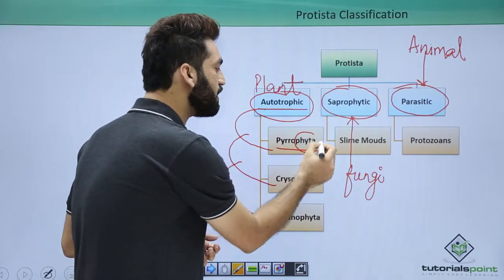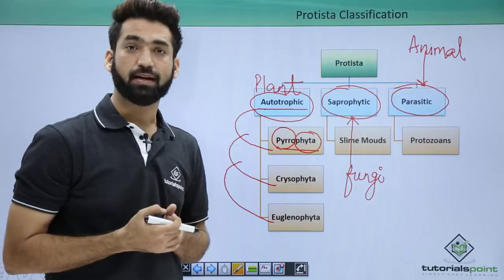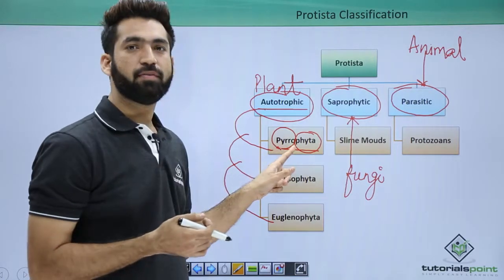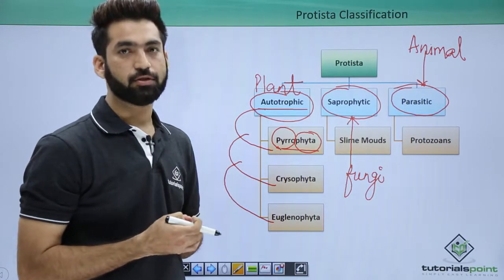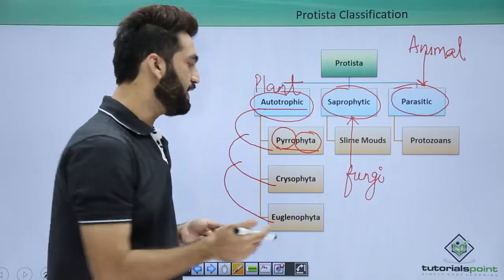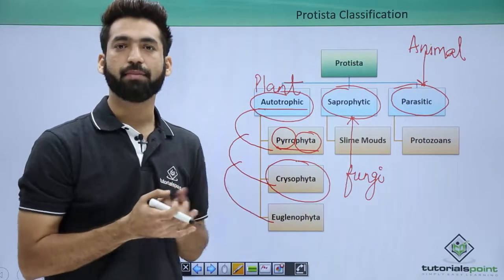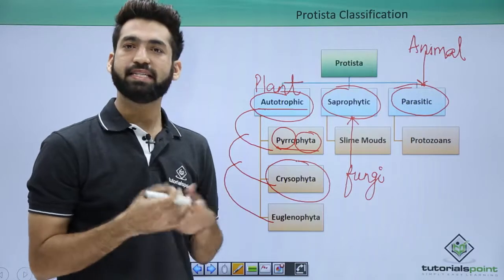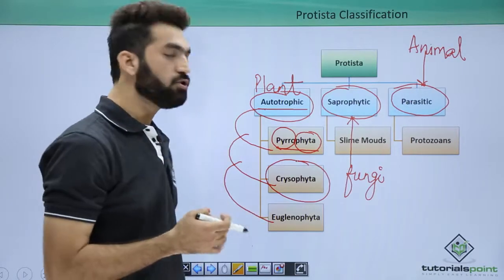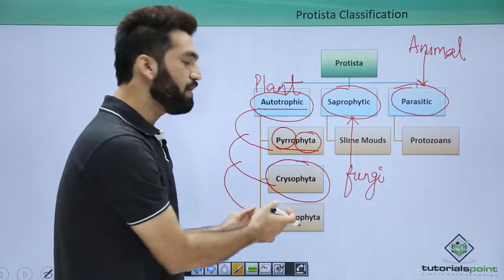These three groups have a holophytic or photosynthetic mode of nutrition. Pyrophyta — where 'phyta' indicates plant-like and 'pyro' means fire — are also called fire algae, and their members are dinoflagellates. Chrysophyta have an important food reserve called chrysolaminarin, and include diatoms and desmids — diatoms are in your syllabus. Euglenophyta is the group of euglenoids, including Euglena.